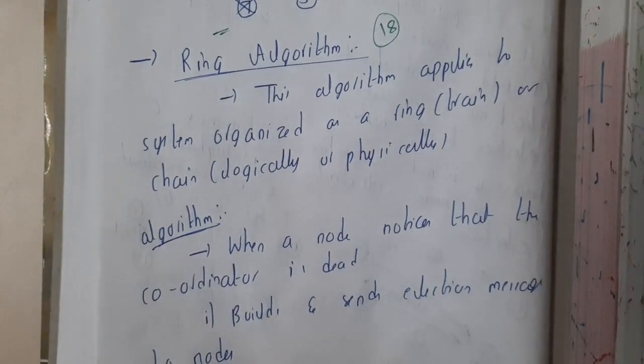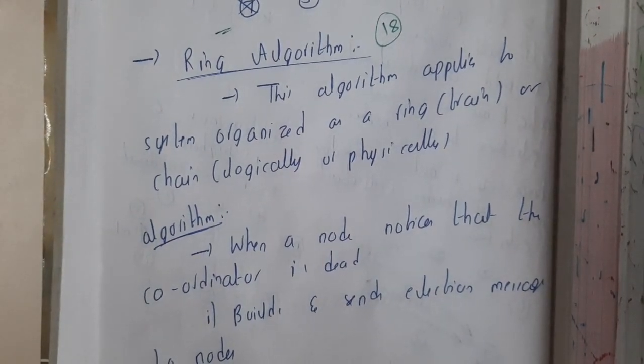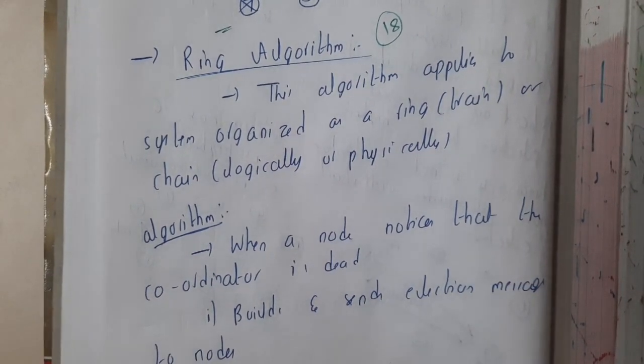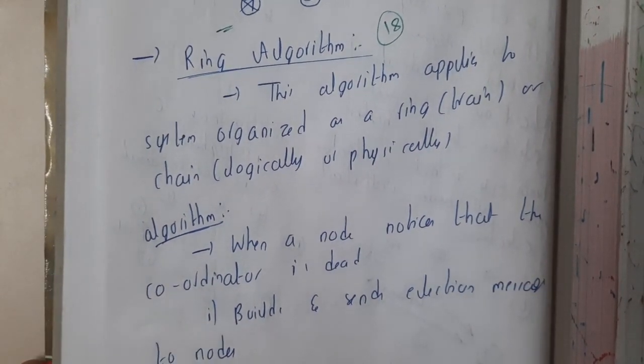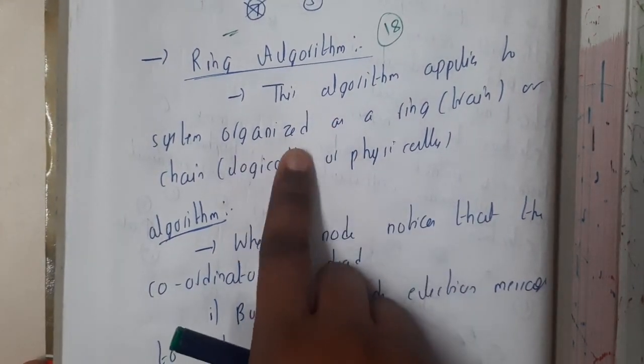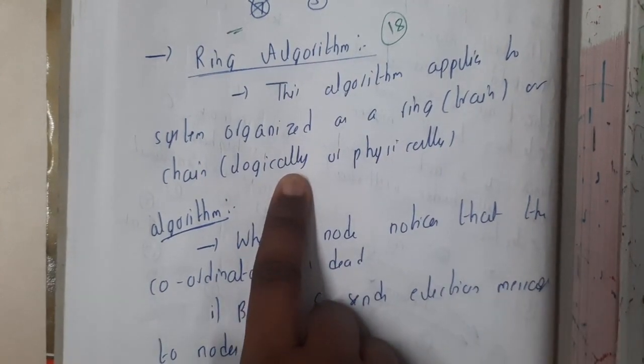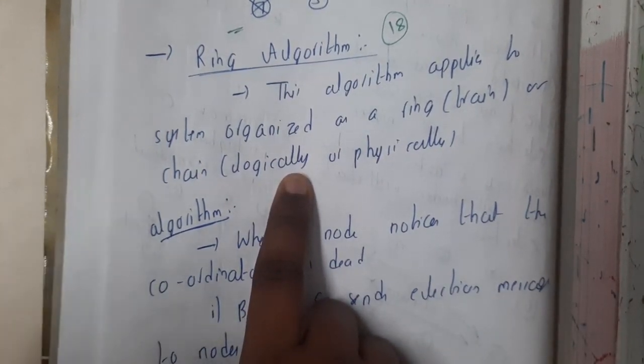Hello, we are back with our next lecture. In this lecture, let us go through the concept of ring algorithm. This algorithm is also used for election in distributed systems. The algorithm applies to system organization as a ring, train, or chain. Basically, this algorithm is really easy.